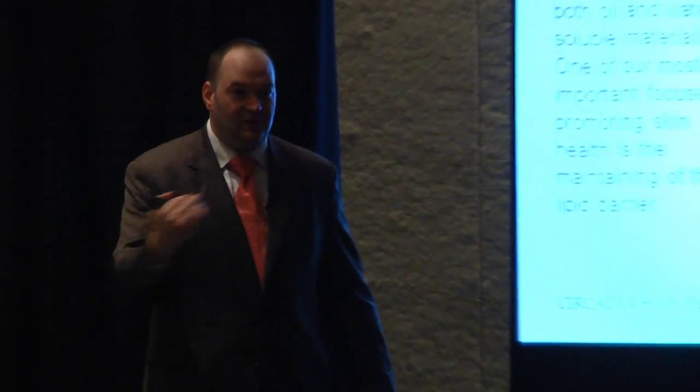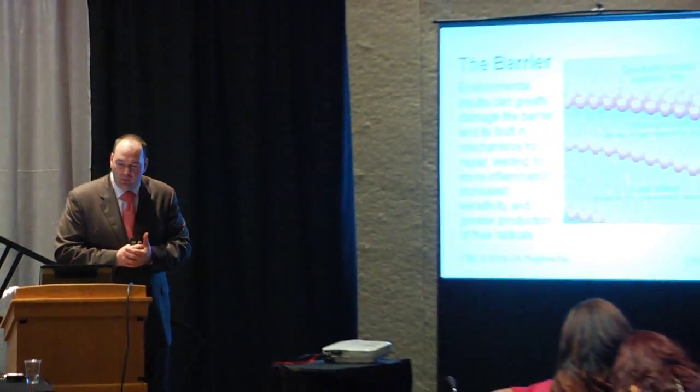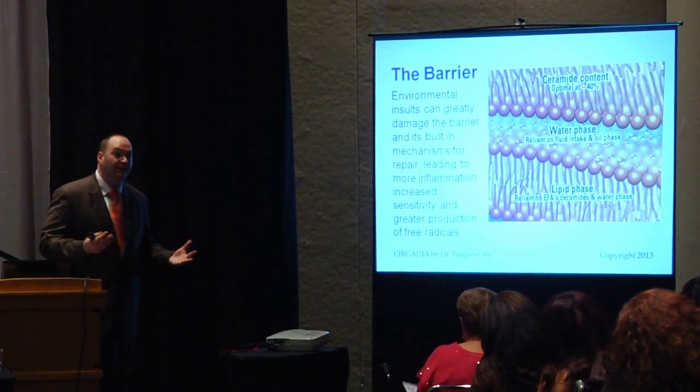Tocotrienols are lipid antioxidants that can reside within the membrane of the cell, functioning like soldiers on the front line. When free radicals approach the cell, vitamin E donates an ion to stabilize them. Free radicals are molecules with unpaired electrons — electrons naturally seek pairs, so they attack membrane structures of cells, breaking them down and leading to further inflammation and damage. By using these antioxidants, we can stop that process. Protecting that layer from environmental insults is one of the main focuses of professional skincare.